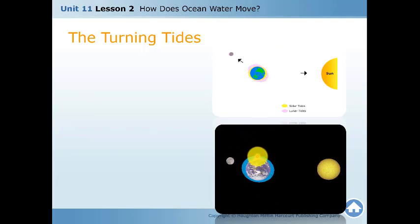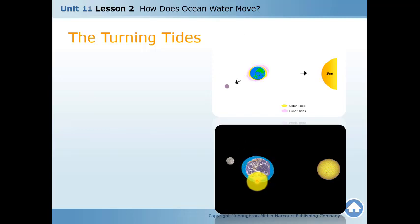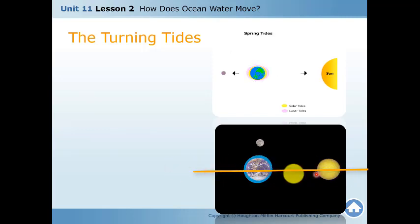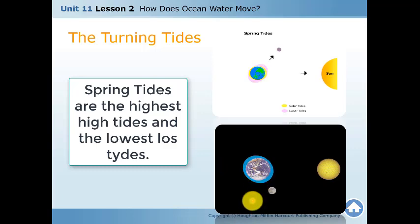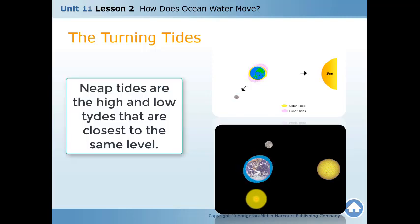When you have the neap tide position there is a high tide, but it is not very high. This happens when the moon is not lined up in a straight line with the sun and Earth. When the moon, sun, and Earth make a straight alignment, they have the highest tide — we call this a spring tide. When the alignment forms an L-shape, the tide is not as high — we call this a neap tide.